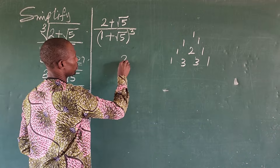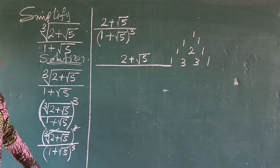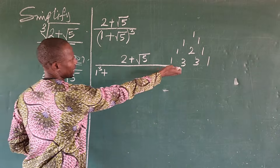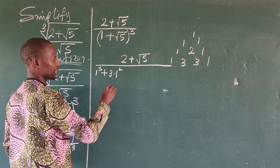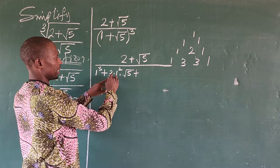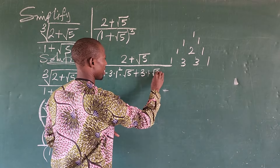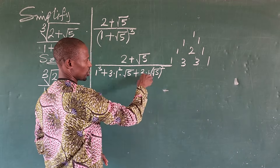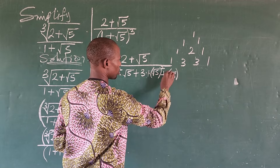Expanding the denominator: we have 2 plus the square root of 5, all over. This gives us 1 to the power of 3, plus the coefficient 3 times 1 squared times the square root of 5, plus 3 times 1 times the square root of 5 all to the power of 2, plus the square root of 5 all to the power of 3.